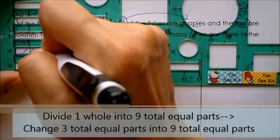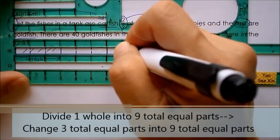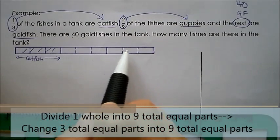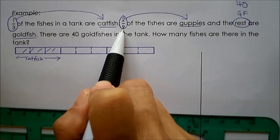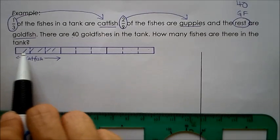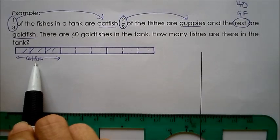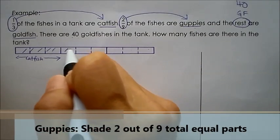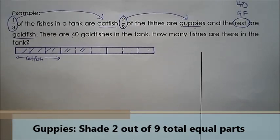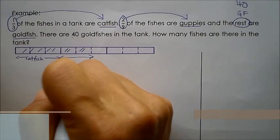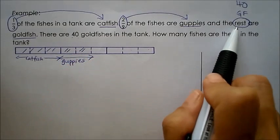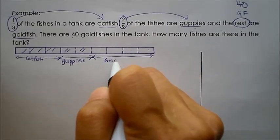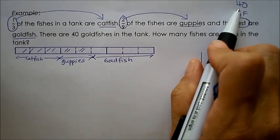Done. Let's check — one, two, three, four, five, six, seven, eight, nine. Nine total equal parts, because now the denominator is nine. So one-third of my total number of fishes still remains as catfish. Now, two out of nine total equal parts are guppies, so I'm going to shade two of the total equal parts and indicate as guppies. And the rest are goldfish — this is the rest, which is my goldfish. And how many do I know? Yes — forty. Forty here.